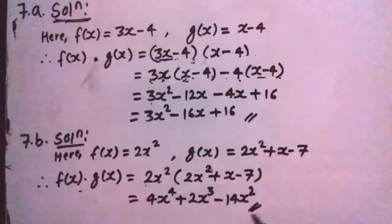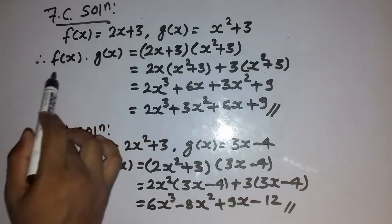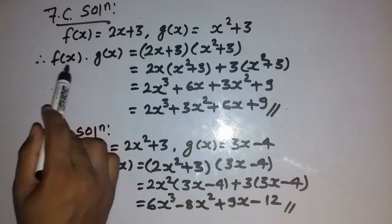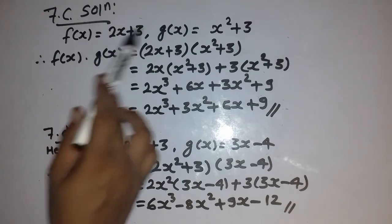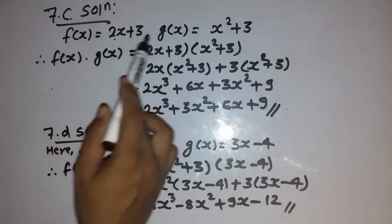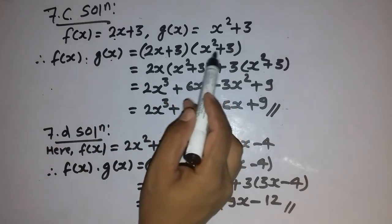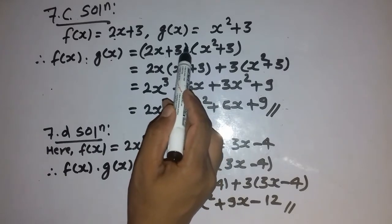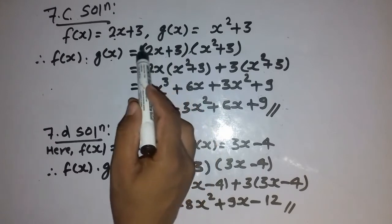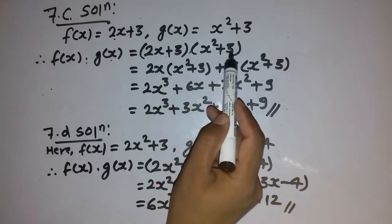In question number 7c, these two polynomials are given and we have to find the product. We multiply f(x) polynomial by g(x) polynomial — it is not necessary to write a dot or any multiplication sign here, because the two brackets themselves mean we have to multiply these two polynomials.